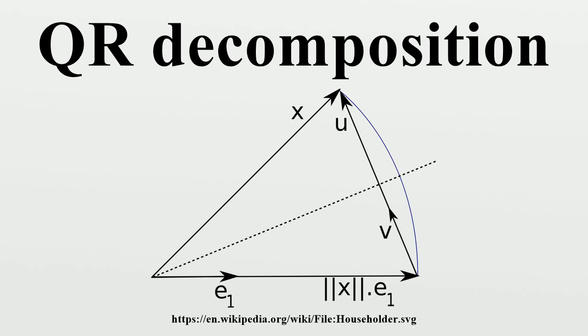Then, where u is the vector, is the Euclidean norm, and I is an M by M identity matrix. Set, or if x is complex.